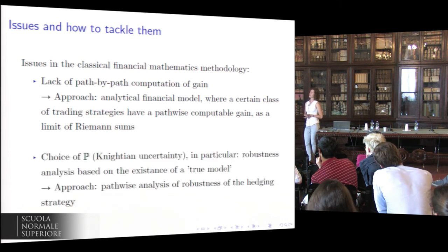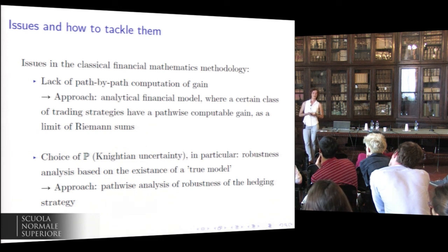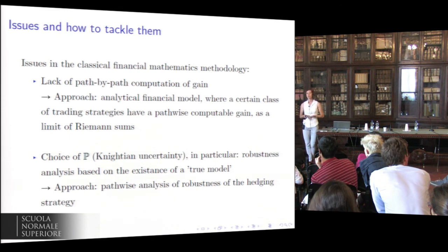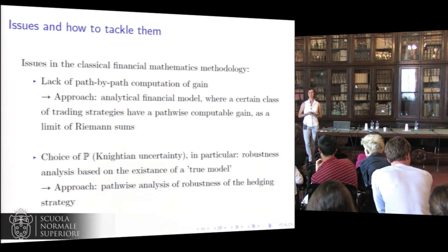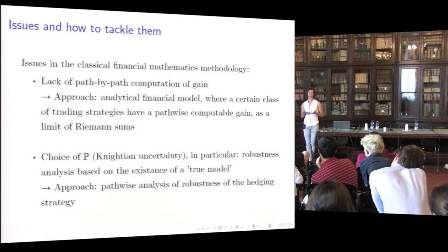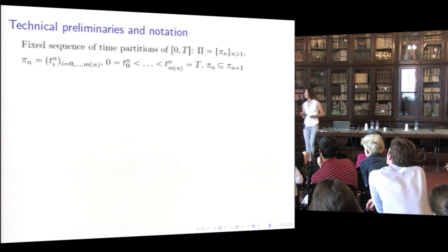Another issue is the risk of the model, known as Knightian uncertainty. In particular, the robustness analysis in the literature involves comparison between two models: one misspecified and one true model. What we do is analyze the robustness of the model used by the hedger — who uses the model to compute prices and build trading strategies — but we analyze performance with respect to the real trajectory of prices.